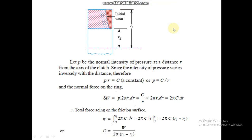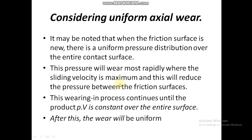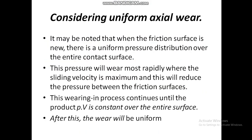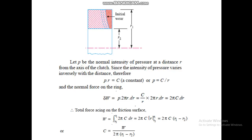Hello students, this is Friction Clutches Part 2. To continue, you need to have watched Part 1. We discussed in the previous part that there are two theories applied to clutches: when the clutch is new, we apply uniform pressure theory, and when the clutch is old, we apply uniform wear theory. In uniform wear theory, pressure is inversely proportional to radius.